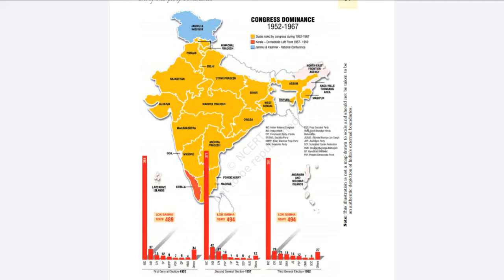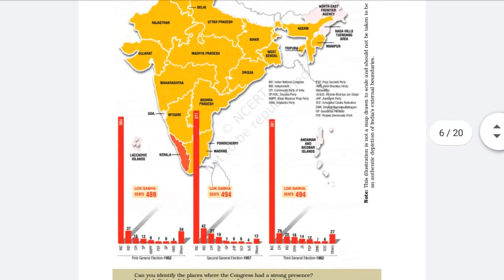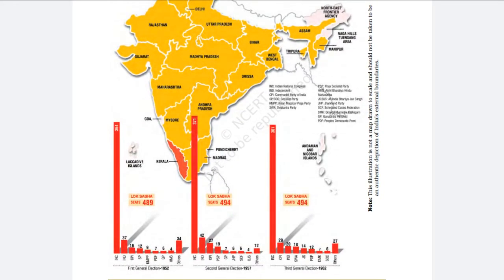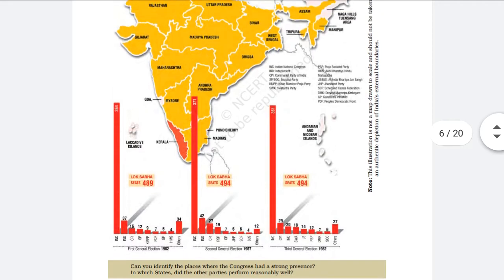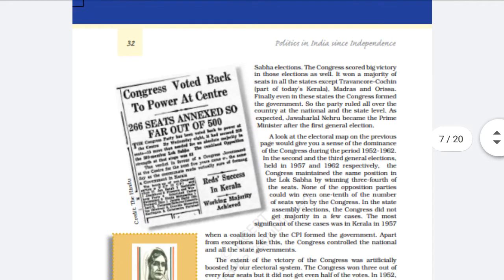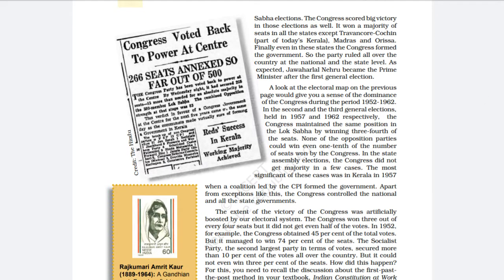In all three elections, the Indian National Congress won almost three-fourths of the total seats. In the first election, Congress won 364 seats out of 489. In the second election, Congress won 371 seats out of 494. In the third election, held in 1962, Congress won 361 seats out of 494. So by these results we can say that from 1952 to 1962, there was only one dominating party — the Indian National Congress.